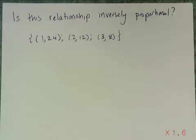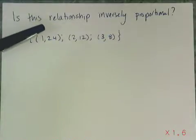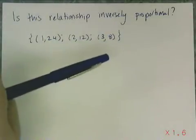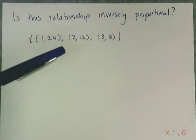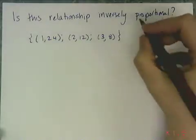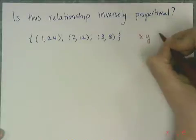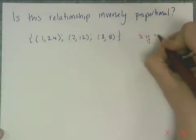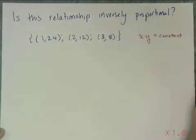Let's determine if the relationship shown in these ordered pairs is one that is inversely proportional — meaning, do these three points belong to the same inverse variation? For inverse variation, it's not the same as direct variation; it's quite the opposite. The constant is determined by x times y. So if x times y is constant, then I have an inversely proportional relationship.